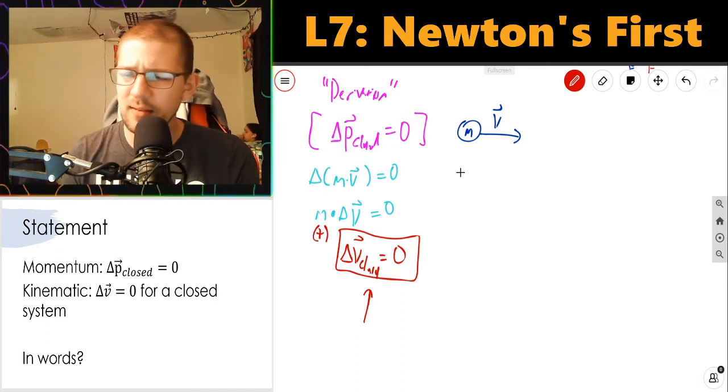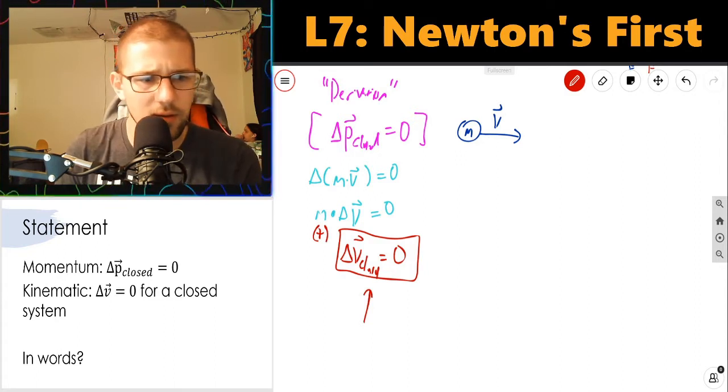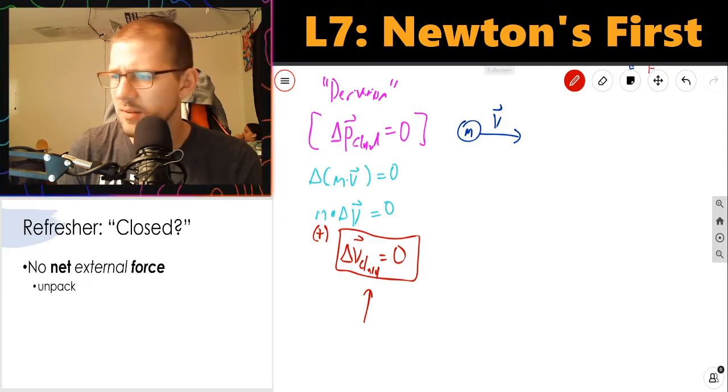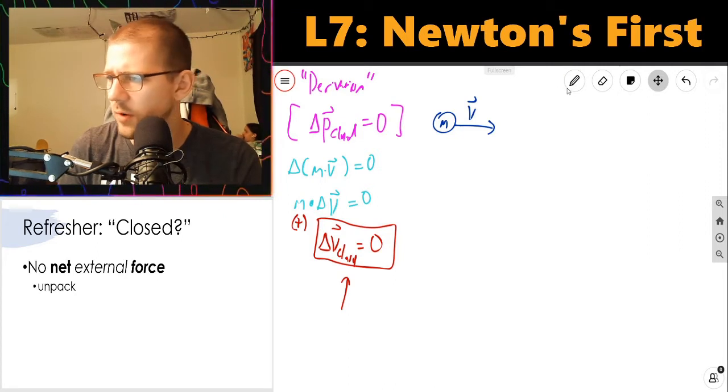There's an 'unless' that's tacked on sometimes, which is unless acted on by an outside force. So that's a nice segue into this refresher for what 'closed' means. Closed means there is no net external force.